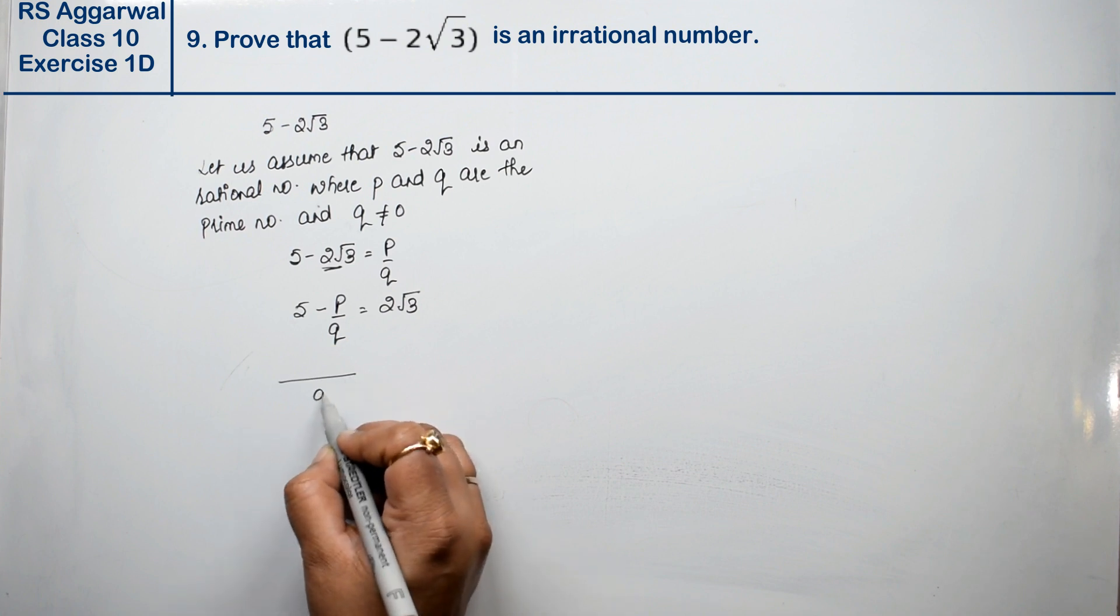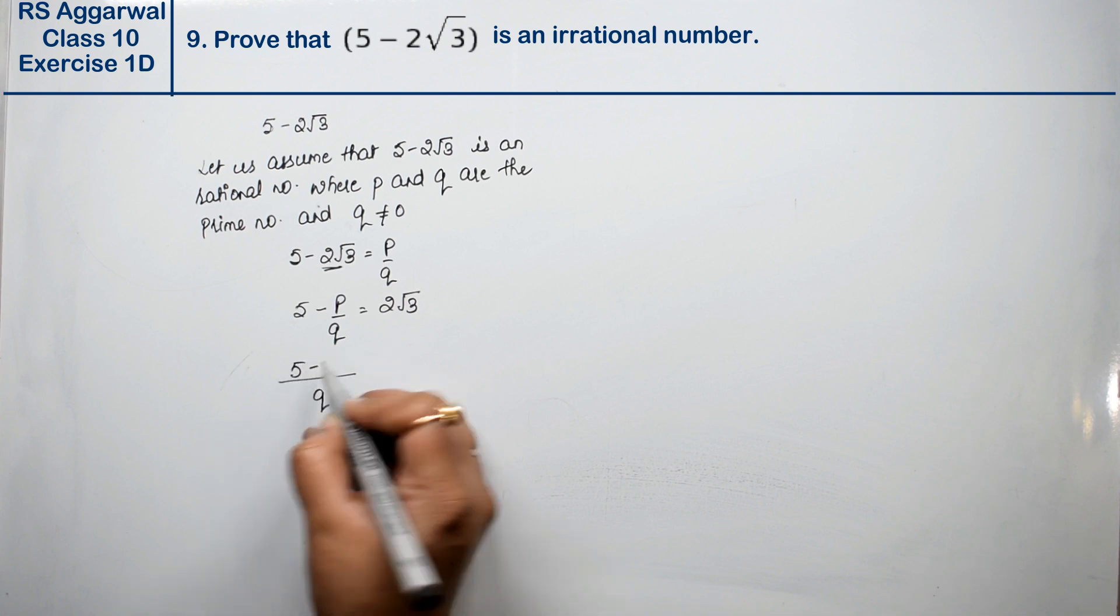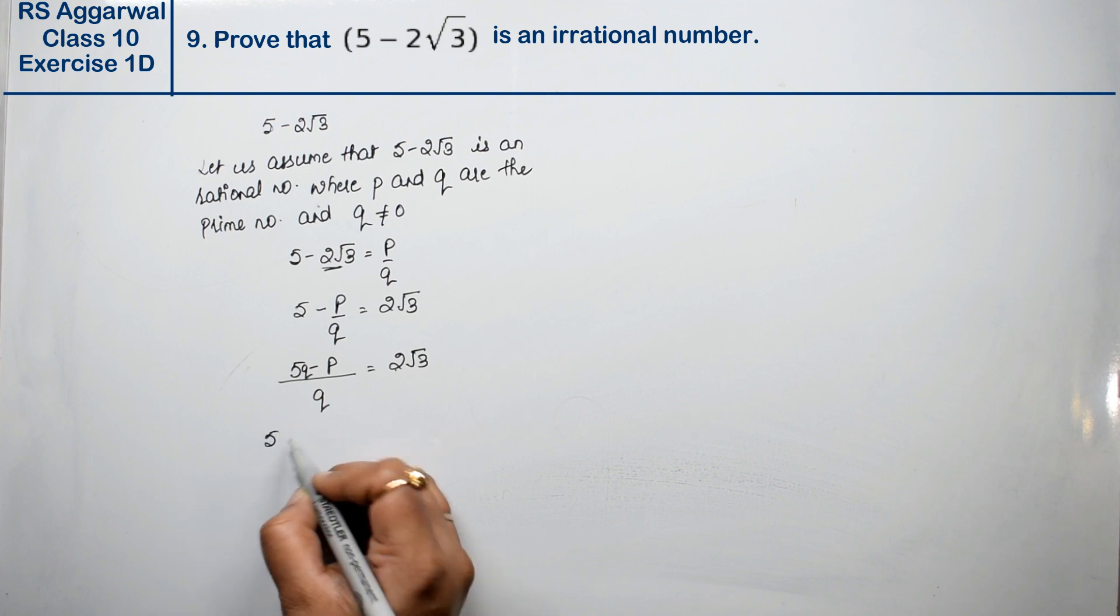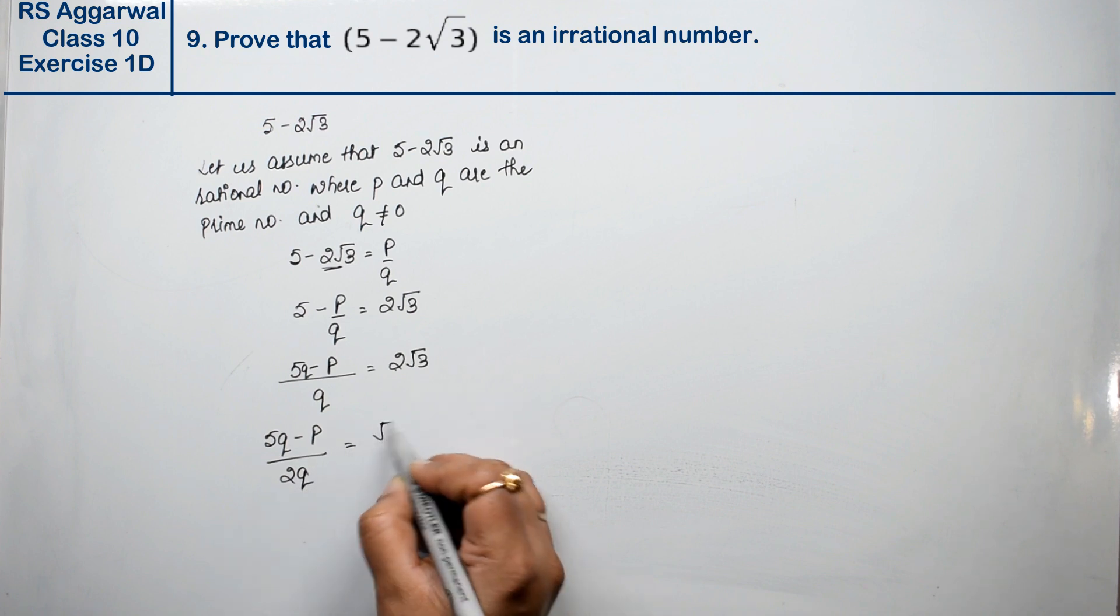Now taking LCM, we get 5Q minus P equals to 2 root 3. Now when 2 goes down, we get 5Q minus P upon 2Q equals to root 3.